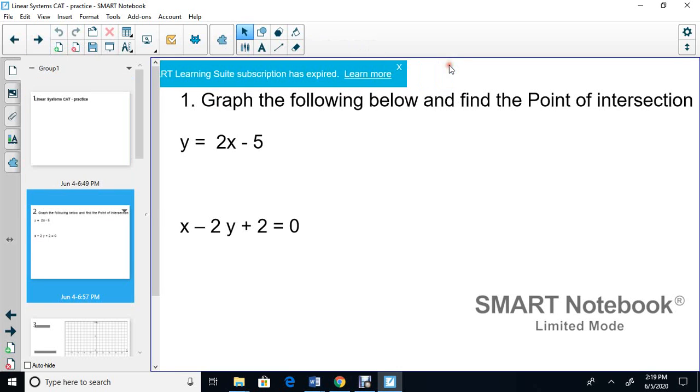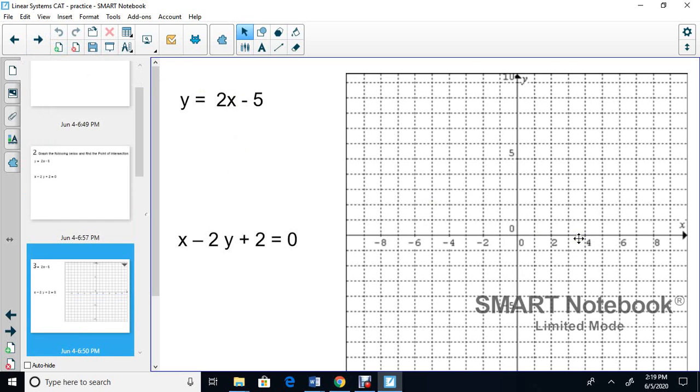Graph the following below and find the point of intersection. So you've got one in y equals mx plus b form and the other isn't. We'll start with the one with y, which is in the y equals mx plus b form. So right here, I'm going to show you what the slope is. So m is 2, it's the number in front of the x. So it's like 2 over 1 as a fraction. And the b is negative 5.